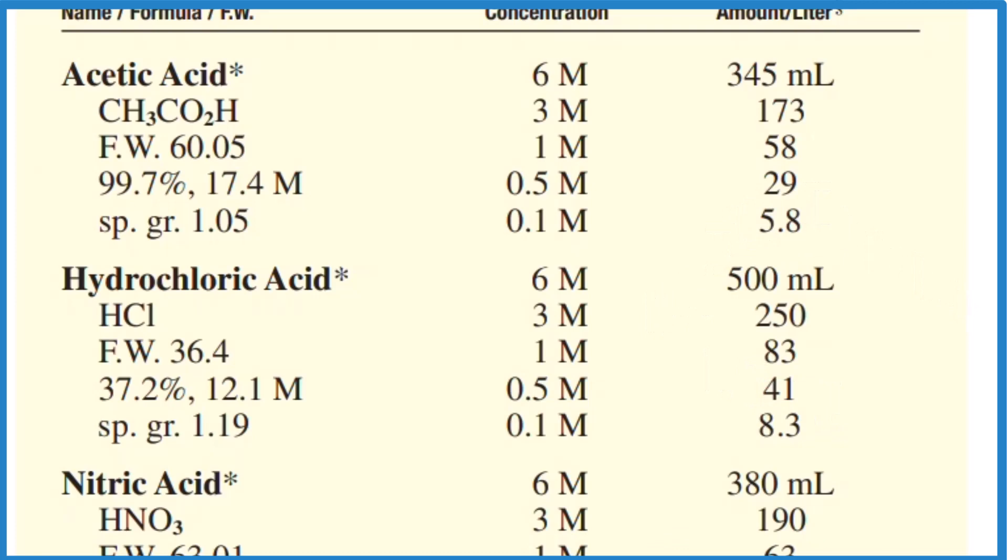So you put some water in the volumetric flask, then you'd add the hydrochloric acid, 83 milliliters of it, then you'd add more water until you got up to one liter, and you'd have your one molar solution. So that's the first way to do it.